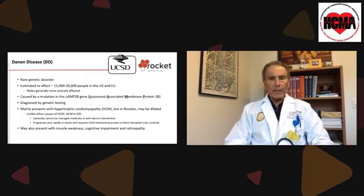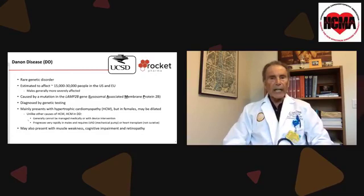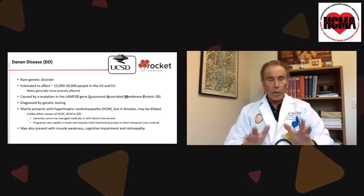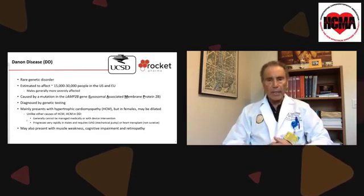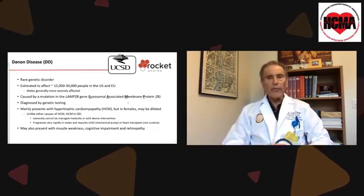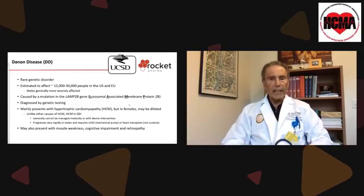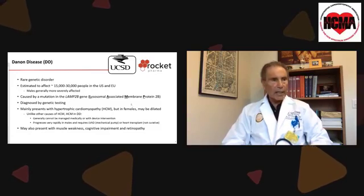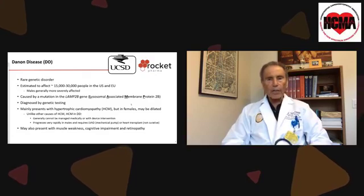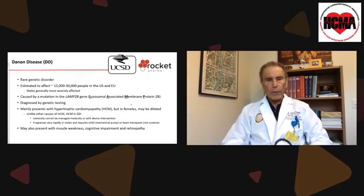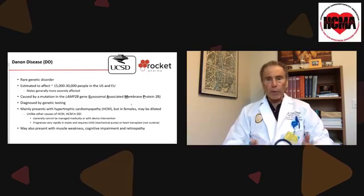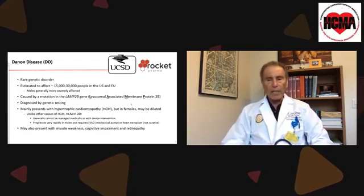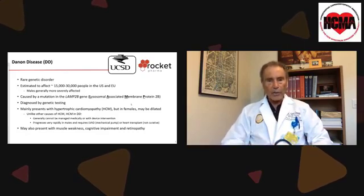Let me explain a little bit to the audience what Danon is. First of all, it is a rare genetic disorder. The estimates are that in the U.S. and the European community, it affects somewhere between 15,000 to 30,000 people, males and females. But males are more severely affected than females. It's caused by mutations in a specific gene — the LAMP2B gene. LAMP stands for Lysosomal Associated Membrane Protein, and it's a critical protein within cells throughout the body, particularly cells within the heart.